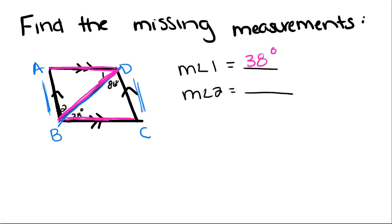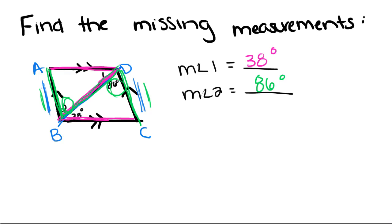If I look at these two parallel lines, instead of these two, they're also cut by this transversal BD. Because I know their alternate interior angles are congruent, I'm going to start with this first parallel line, come down the transversal BD, and go over to this parallel line. That means angle 2 has to be 86 degrees, because they're congruent, which means they have equal measures.